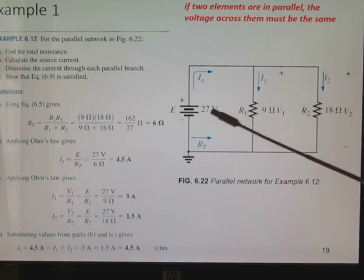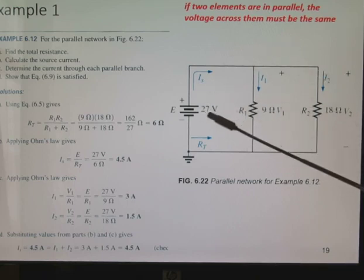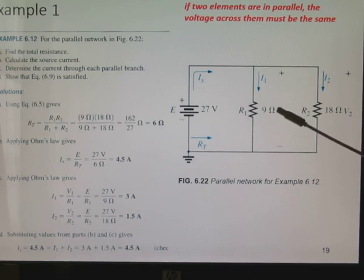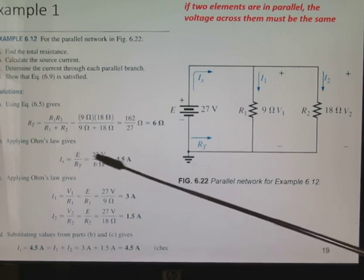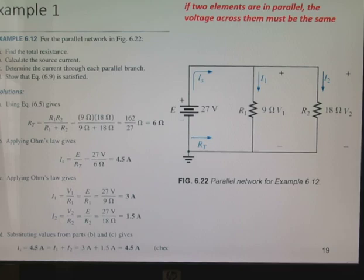If I wanted to find I1, since I know the voltage is the same across both of those resistors, I know that V1 is equal to E and so is V2 is equal to E. So I could use Ohm's law. I can use E or V1 over R1. And I get 3 amperes coming down here. And I could do the same here. 27 divided by 18 gives me 1.5. I add those and I get 4.5. So either way would work. If I found the individual currents and the total current using this method, both will give me the same result. And that's a good check.